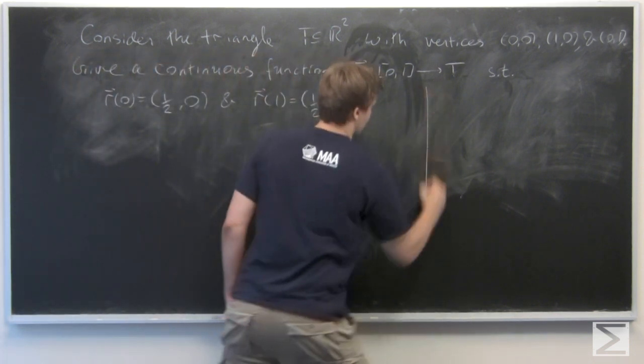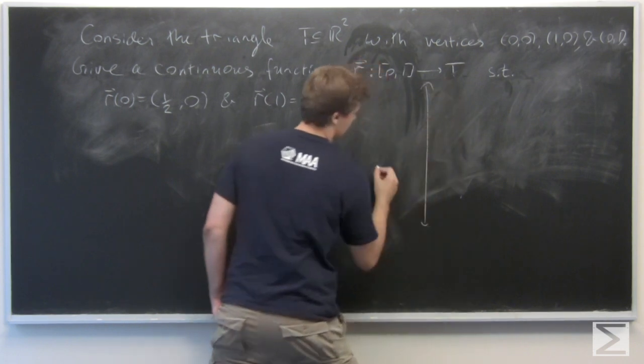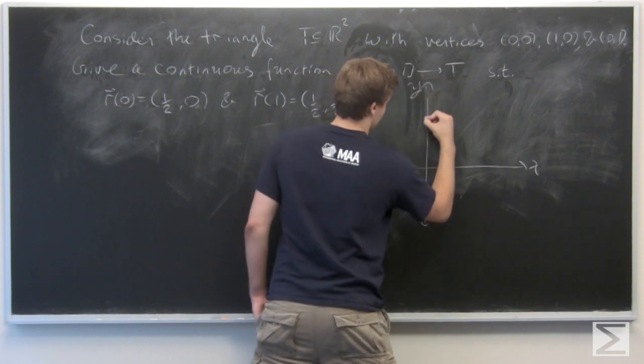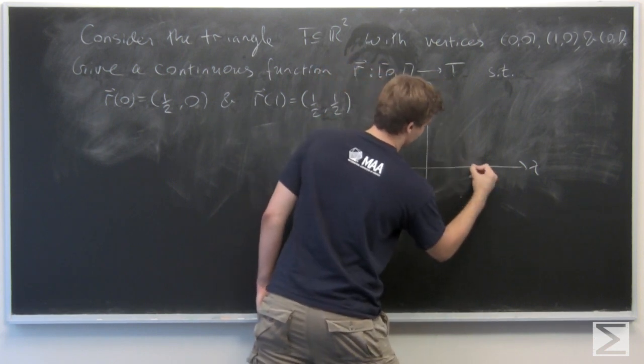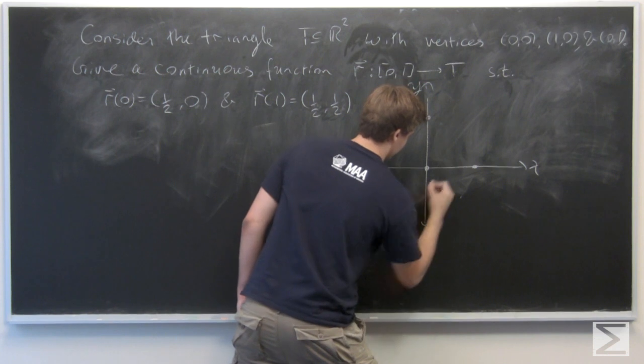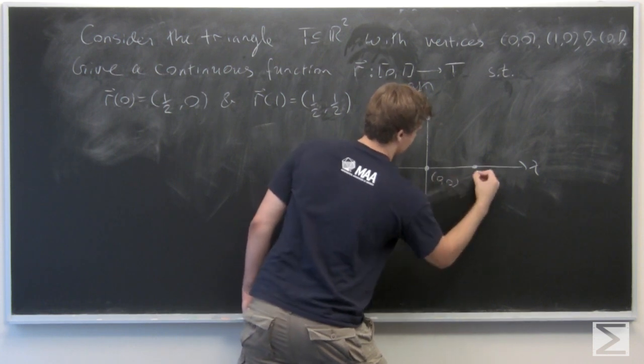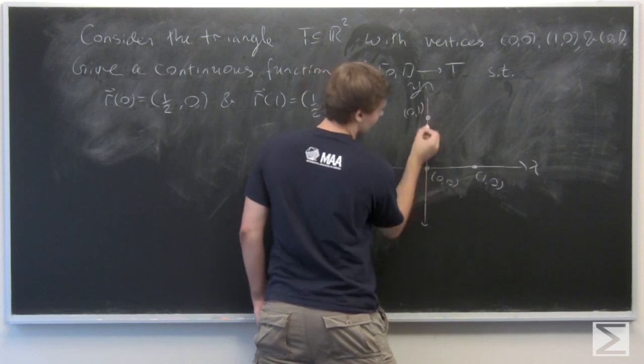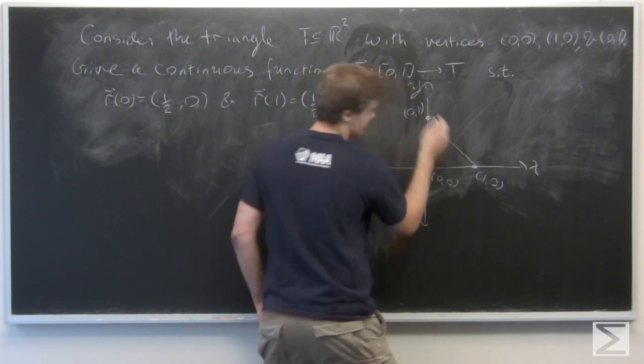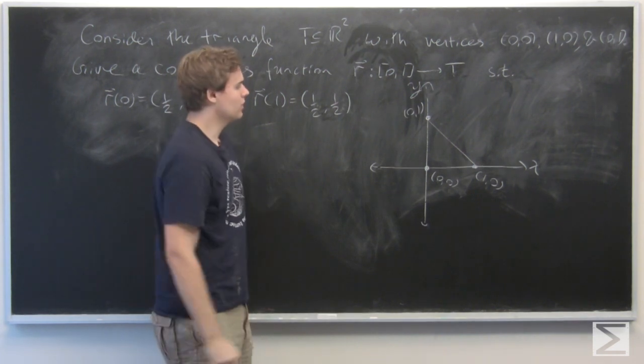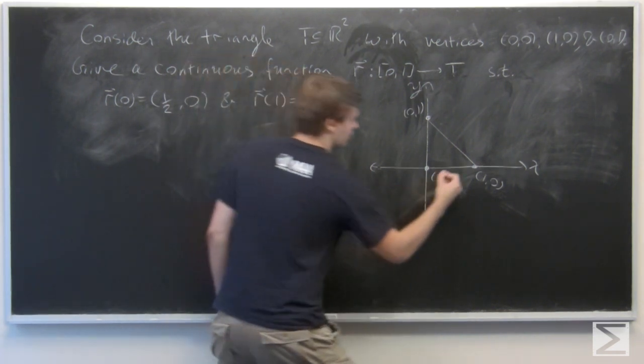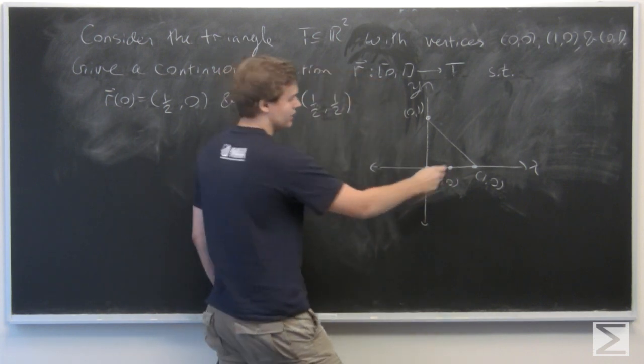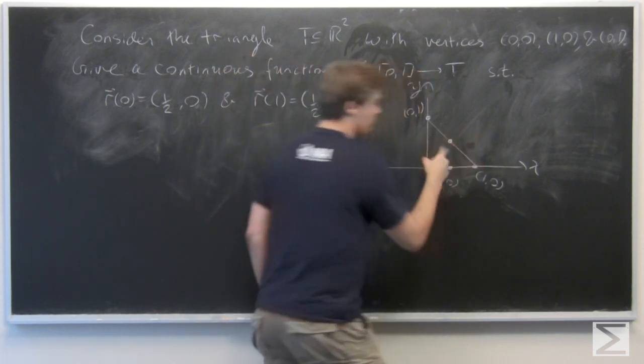So drawing this out, this is x, this is y, this is (0,0), (1,0), and this is (0,1). And this triangle right here is T. We want to find some function R that starts here at (1/2, 0) and ends here at (1/2, 1/2).